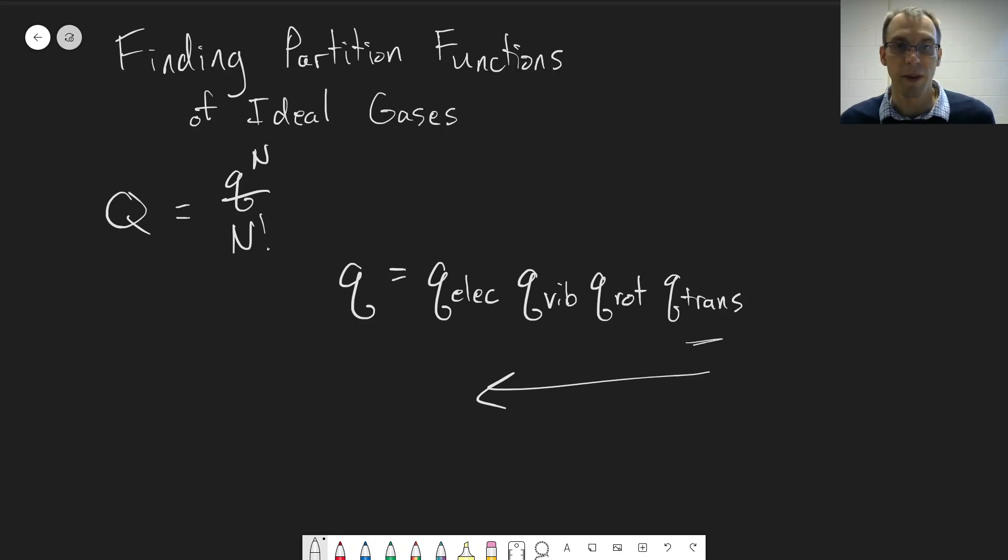For translation, the spacings are very, very small. Rotational, they get a little bit bigger. Vibrational, they're fairly decently spaced apart. And electronic have very large energy spacings.